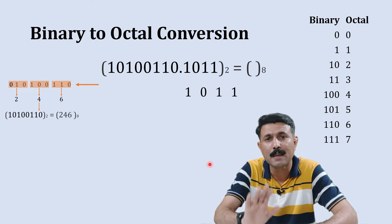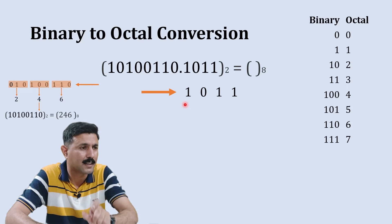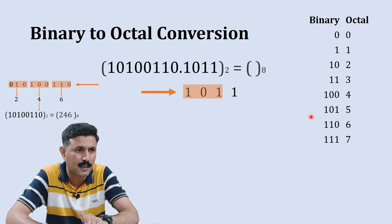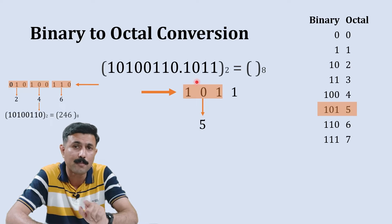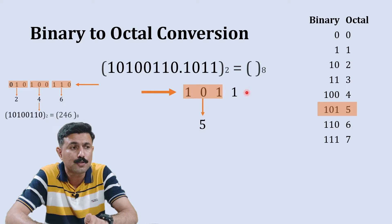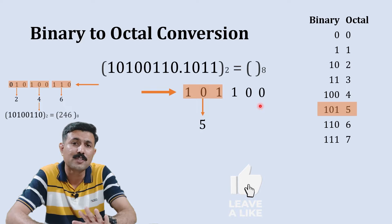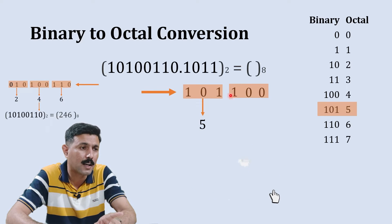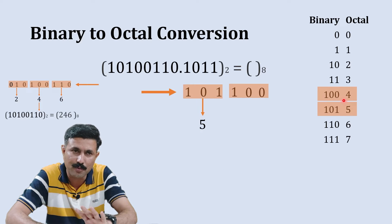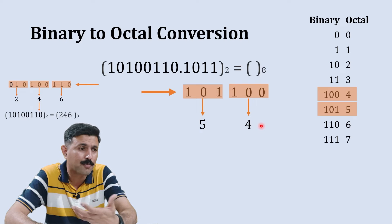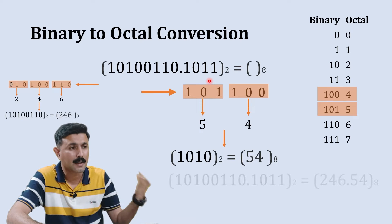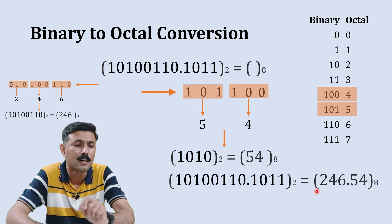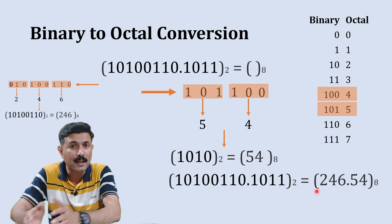Now it's time to convert the fractional part. We follow the same logic, starting from the left-hand side and creating groups of three. The first group is 101, and 101 is 5, so write 5 here. The next has only one digit remaining, so for the fractional part — the right-hand side from the decimal point — you add two zeros after that number. It won't change the magnitude. So we have a group of 100, and 100 represents 4, so write 4 here.